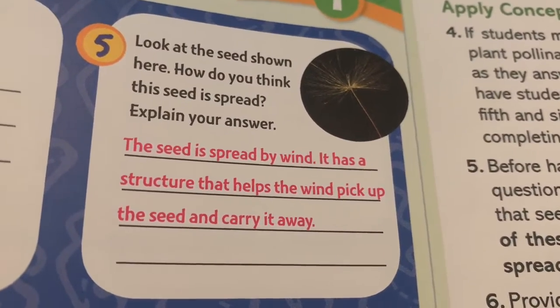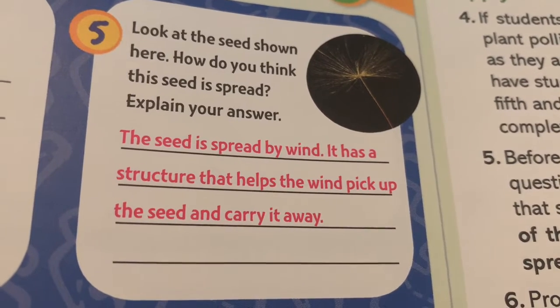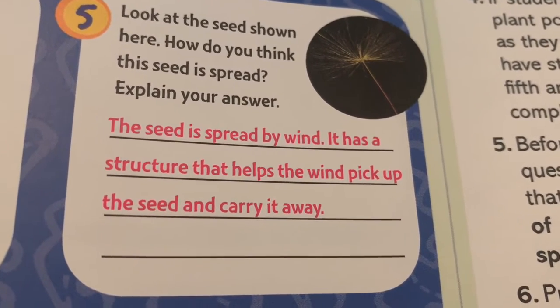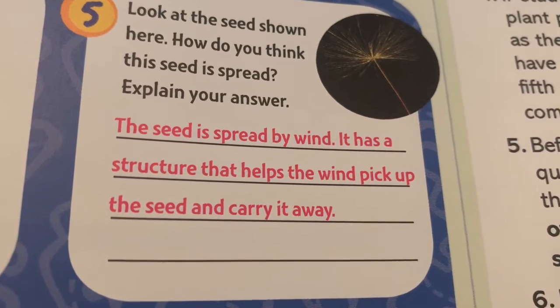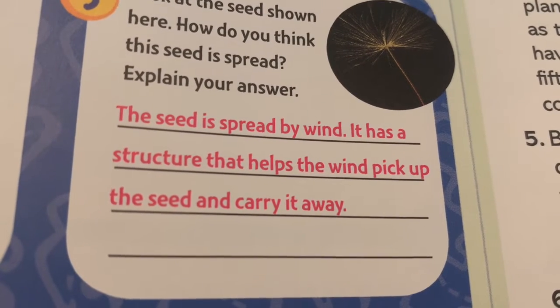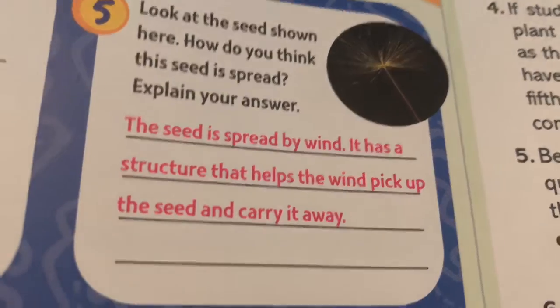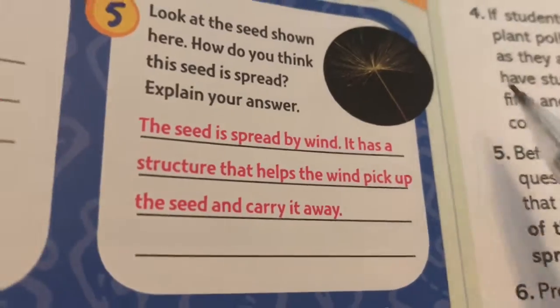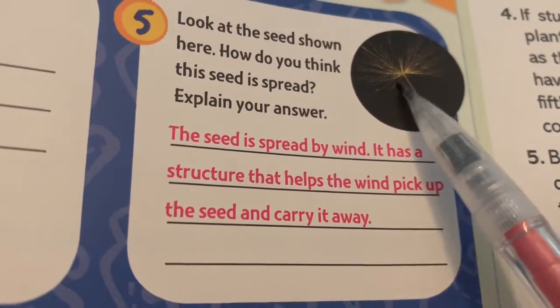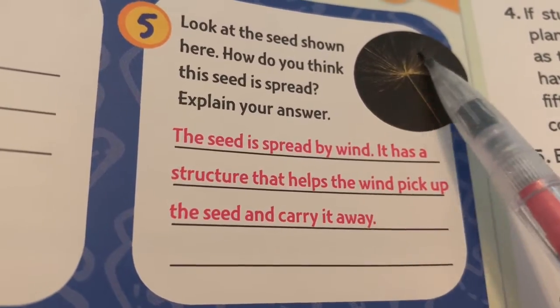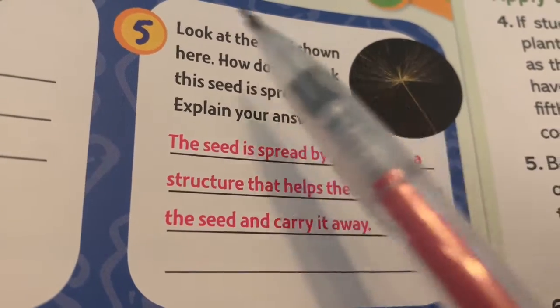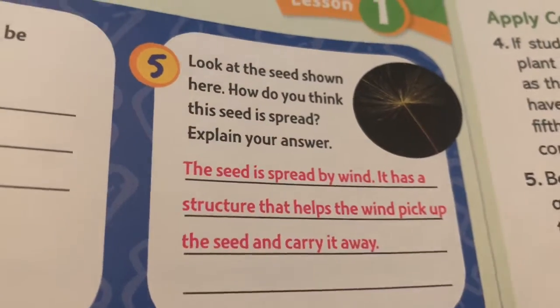Number five: look at the seeds shown here — how do you think the seed is spread? Here's an example answer: the seed is spread by the wind. It has a structure that helps the wind pick up the seed and carry it away. This kind of reminds me of that maple seed experiment — if any of you did that, it kind of twirls and flies off into the wind.